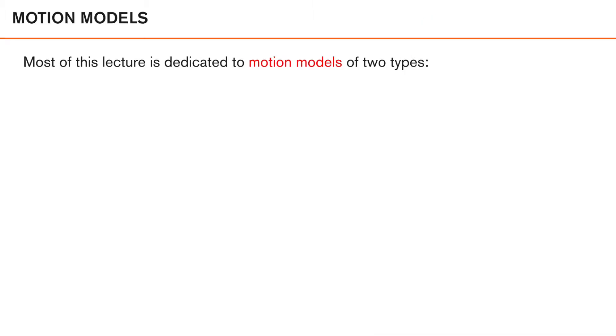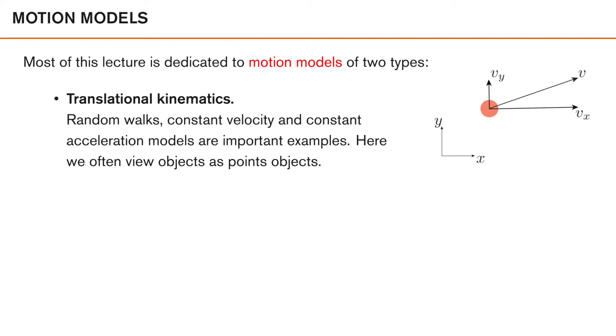Roughly speaking, the motion models that we will look at can be categorized into two groups. The first group contains models that describe translational kinematics. Here, the object is essentially viewed as a point object that moves around in space, so they can be translated. Here we model this using a 2D velocity vector that describes the direction of travel, but they are not rotated.